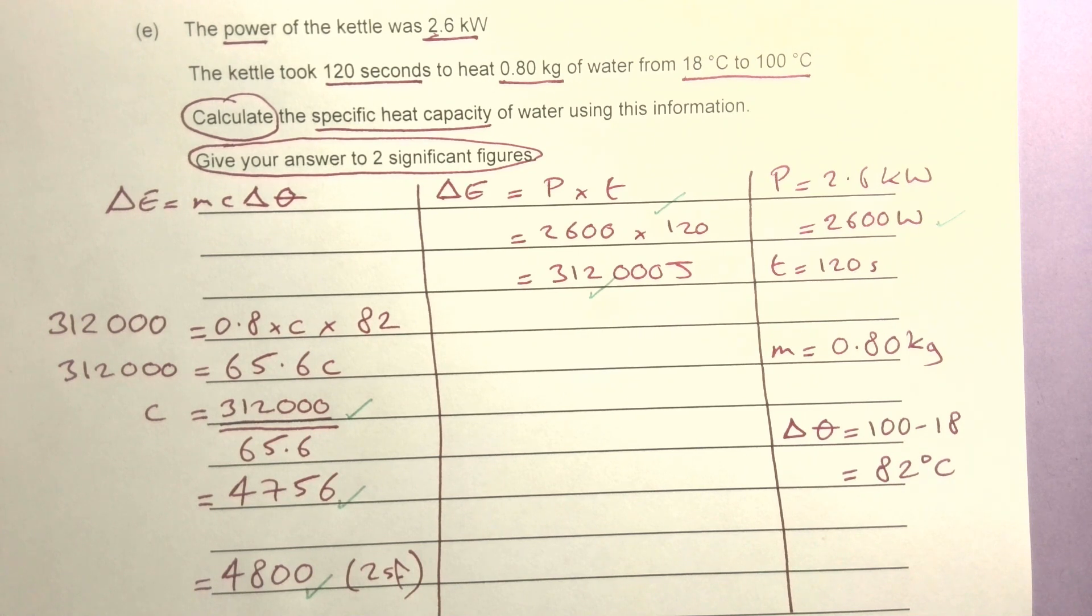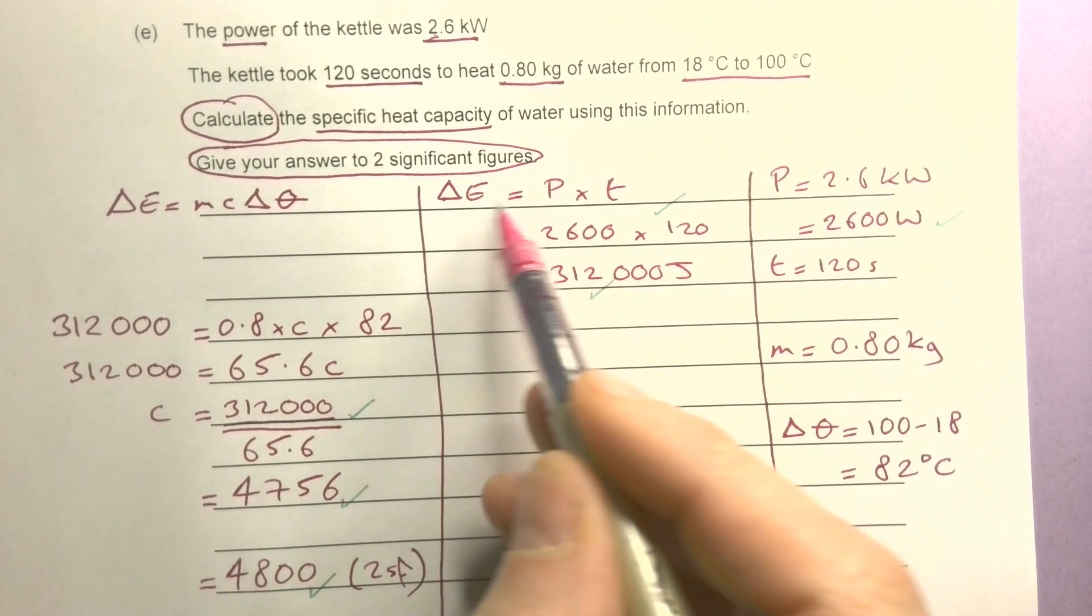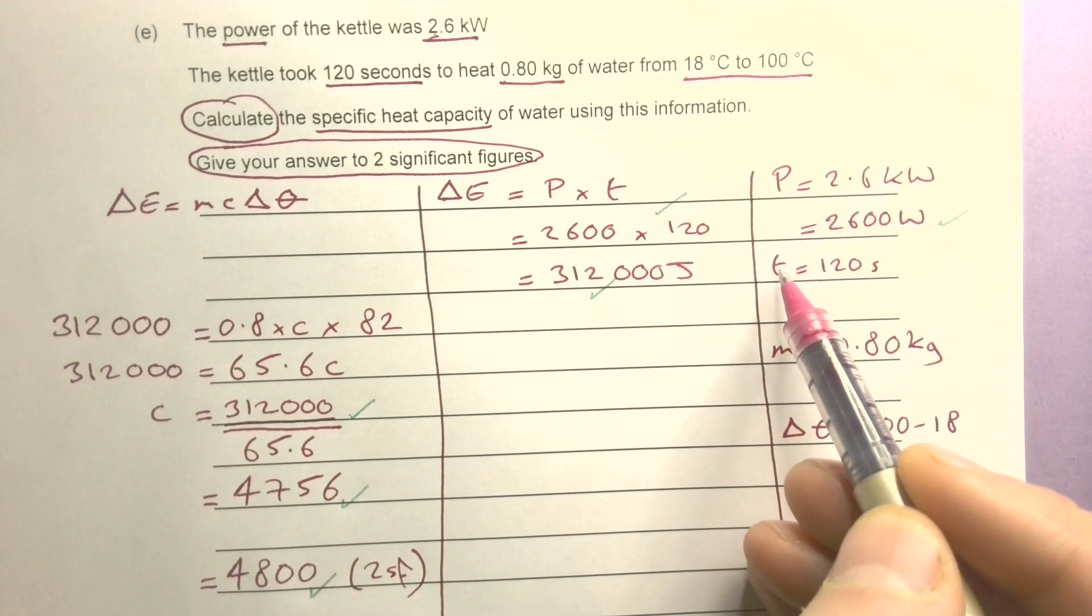The tricky bit there probably is recognizing that you need to get the energy from power and time. But it helped by writing P and t down - as soon as I wrote those down...